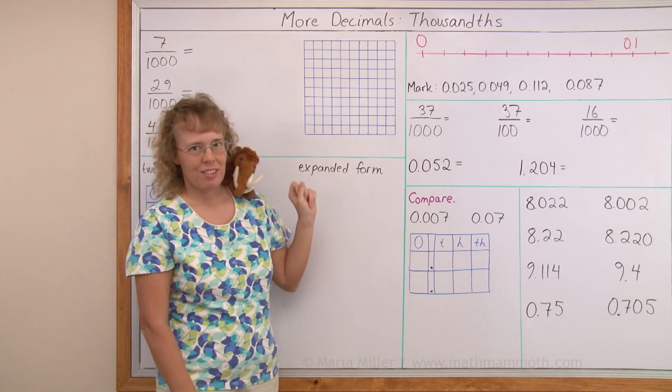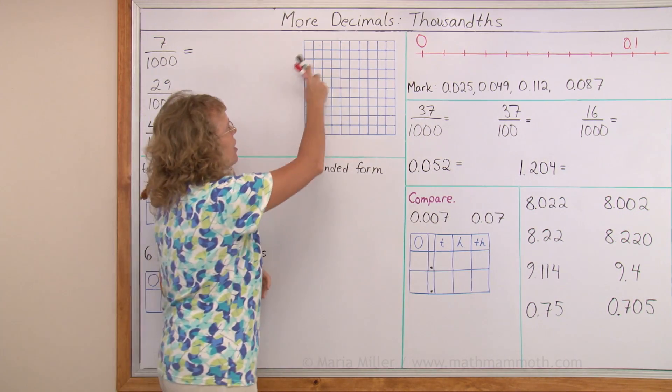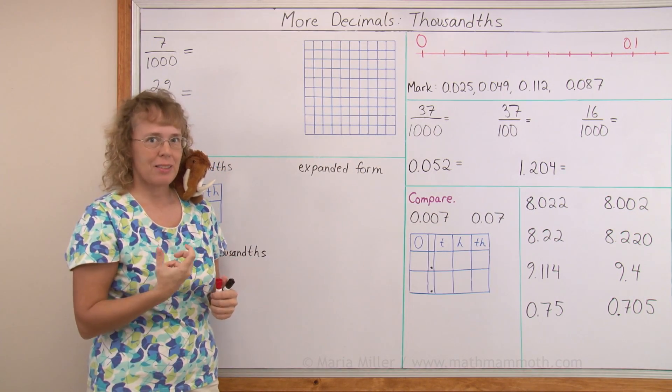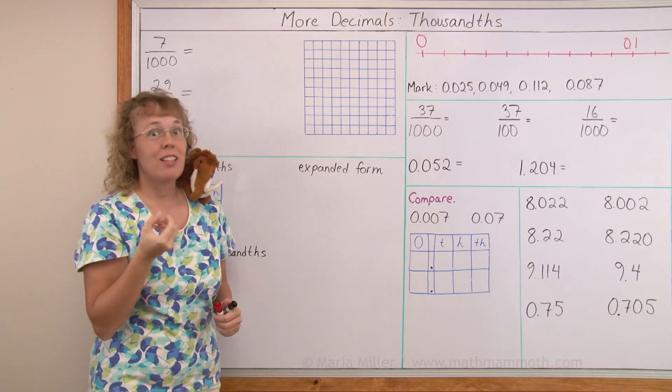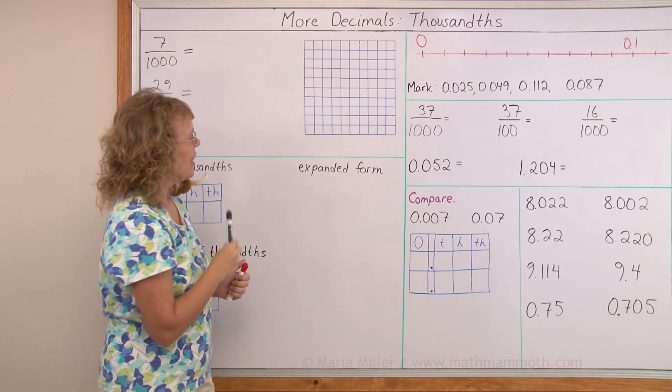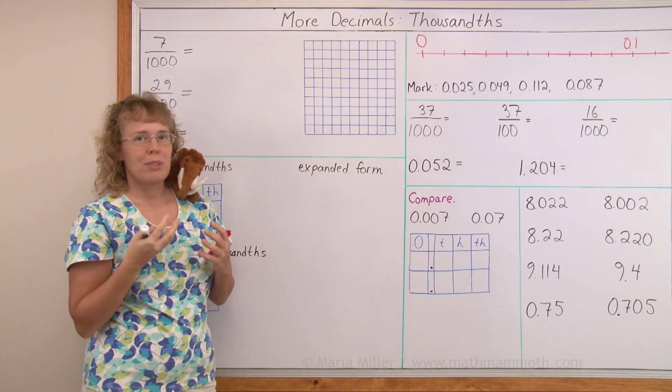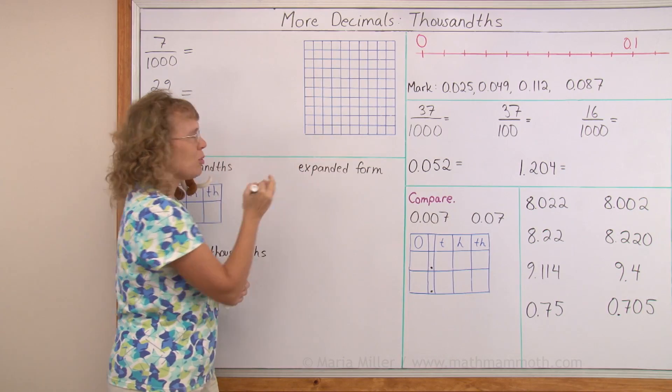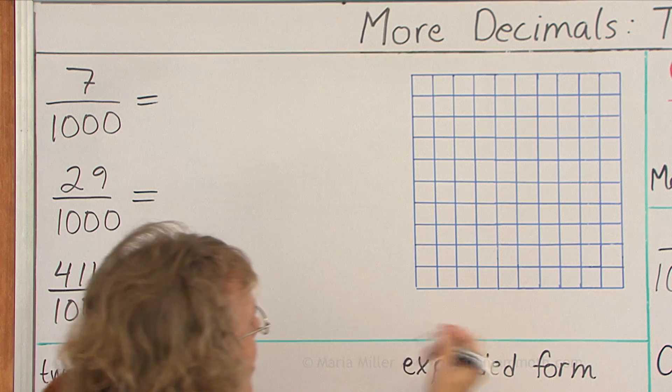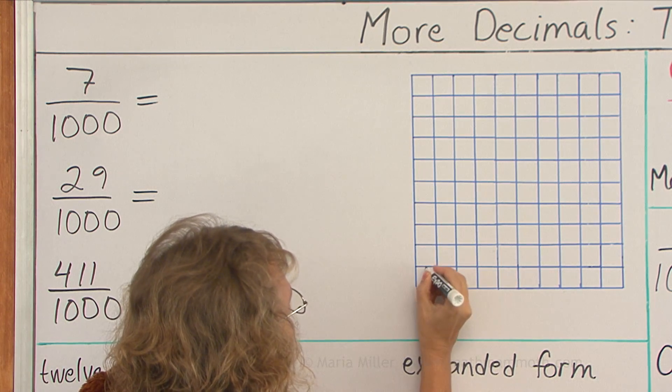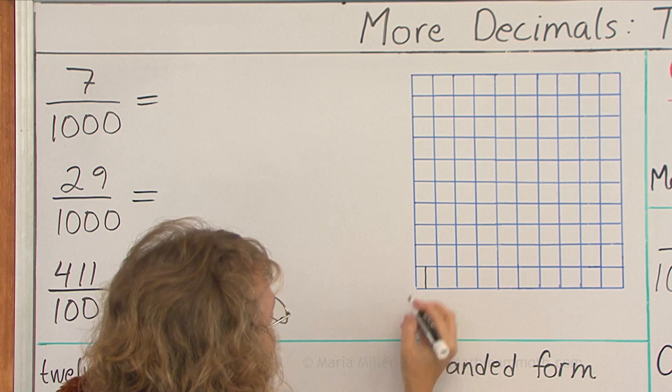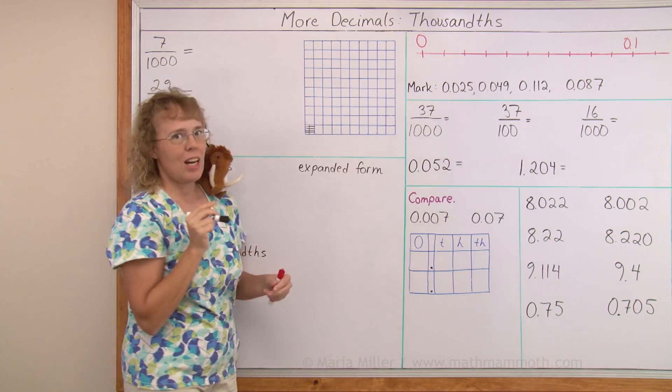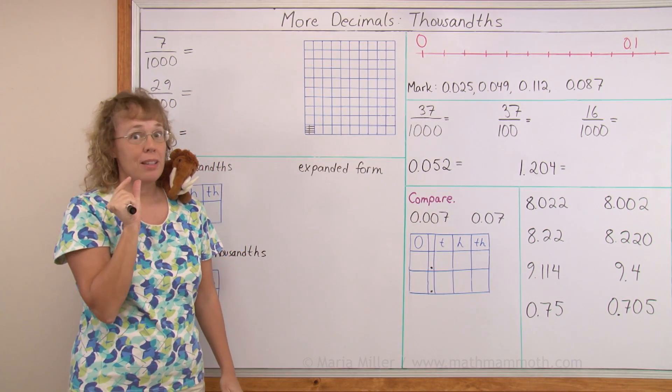I drew here a hundred grid. So imagine it represents one and is divided into one hundred parts. Each little square is one hundredth. Now to represent thousandths I need to divide this one here into ten new parts. I will first divide it in half and then like that. Each one of those little ones is one thousandth.